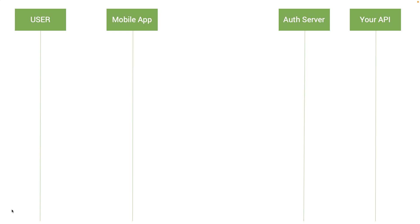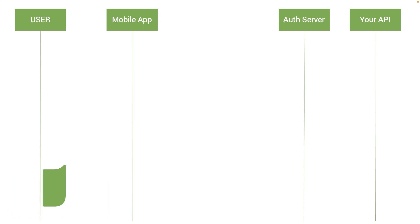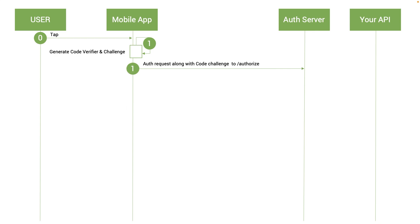The server will then send the access token back to the client — this is how PKCE works. Now let's take a look at the full authorization code flow together with PKCE. It starts with a user interaction: you tap or do something on the mobile application. The app generates a code verifier and sends it — along with the code challenge — to the authorization server.